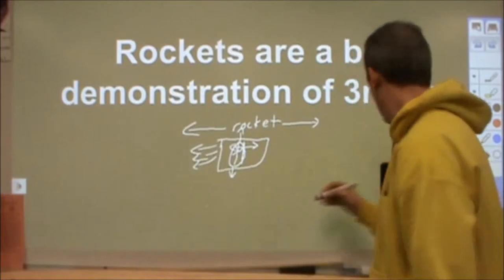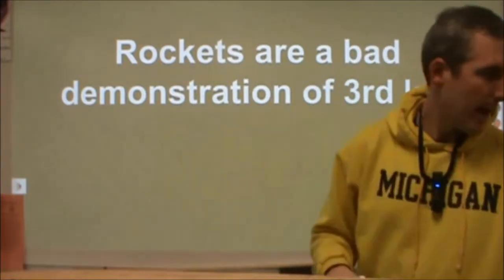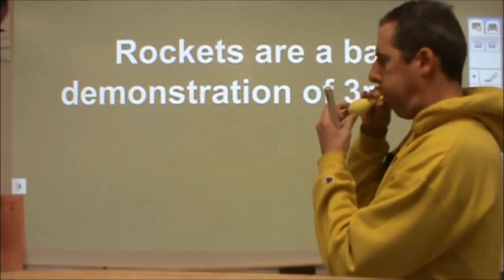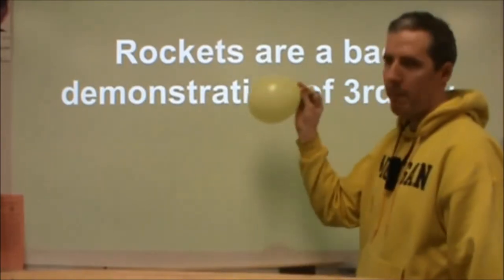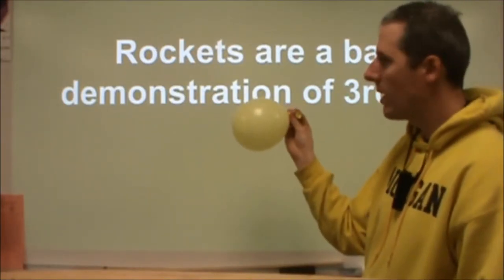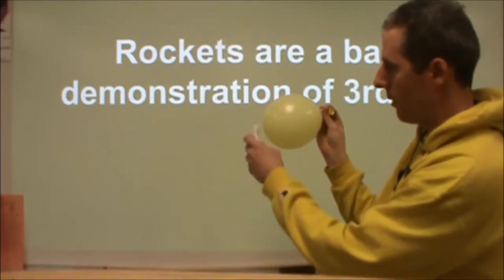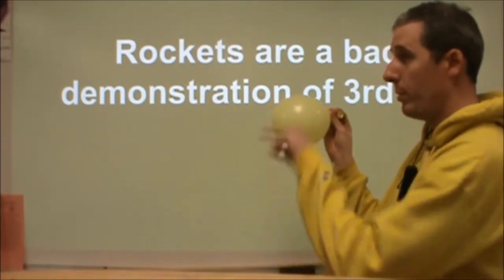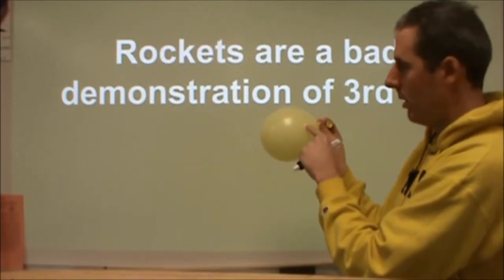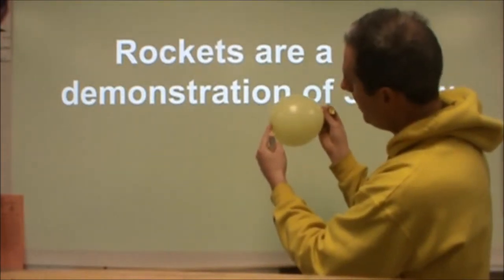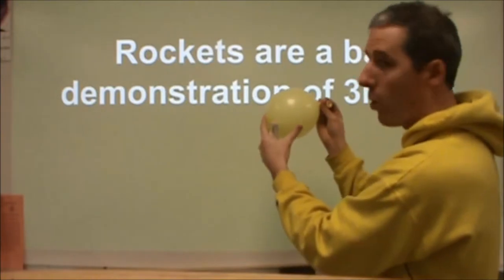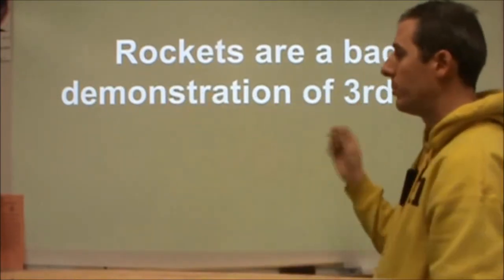A better — though still difficult — example is a balloon. I like the balloon as a way of showing why those rocket demonstrations are poor. If I have a balloon blown up and about to be released, the question is how this is related to Newton's third law. My better question is: where is the Newton's third law component making this thing fly? The answer is it's at the closed end of the balloon — not at the hole where air is leaving. The air leaving the hole doesn't interact with the balloon; it's the air molecules hitting the closed part of the balloon that have no counterbalance on the open side, creating a net force.